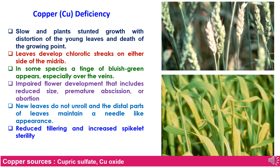In copper deficiency, leaves develop chlorotic streaks on either side of the midrib. In some species, a tinge of bluish green appears over the veins, followed by impaired flower development including reduced size and premature abortion. The new leaves do not unroll and distal parts of the leaves maintain a needle-like, whip-like structure. There will be reduced tillering and increased spikelet sterility, ultimately resulting in less grain formation and lower yield. To overcome copper deficiency, sources like cupric sulphate and copper oxide should be sprayed on time.